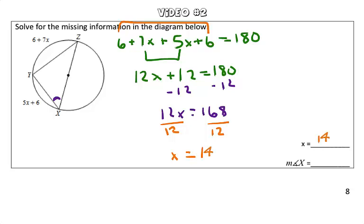Now that we've solved for the variable x, the next question is to solve for the measure of angle x. Taking a look at this diagram, angle x is an inscribed angle, so I'm just going to highlight angle x here. By highlighting it, we see that angle x opens up to arc yz. If we know the measurement of arc yz, we can solve for the measurement of angle x.